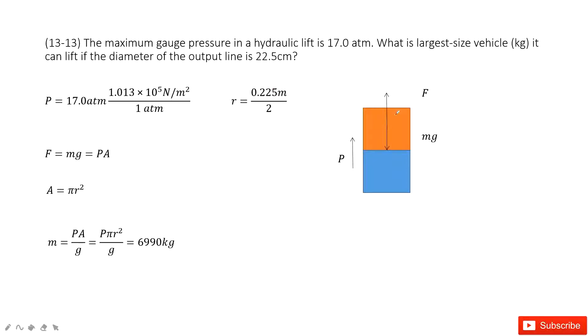In this question, we have a car or vehicle on this lift. The pressure of the lift is given as 17 atm. We can convert this unit to Newton per meter squared. And also the radius for this lift is given.